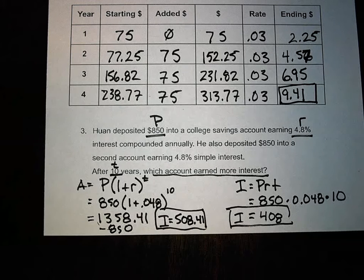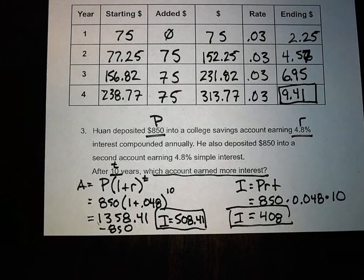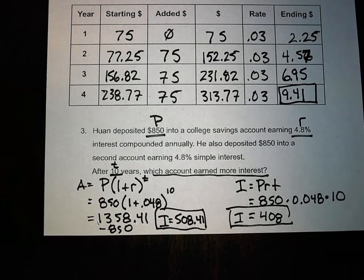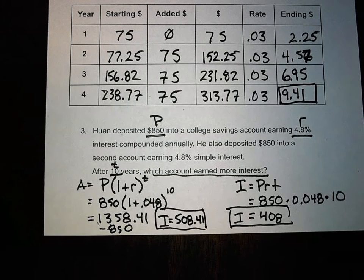Simple interest gives $408. Compound interest earned significantly more — about $100 more on an $850 investment, which is roughly one eighth more. If you take a compound interest loan you'll pay more; if you get a compound interest savings account you earn more than with simple interest. Compounding more than annually makes it exponentially more. That's compound interest — any questions?